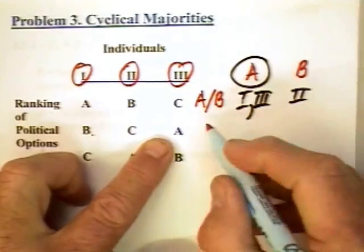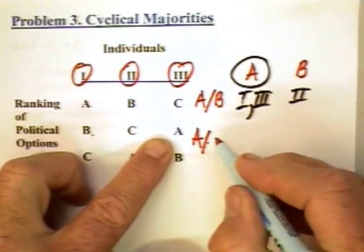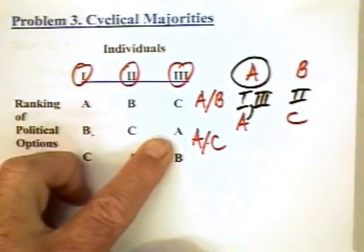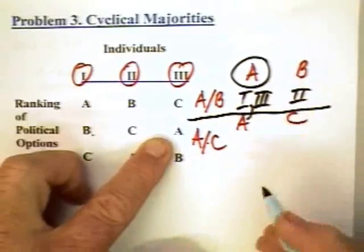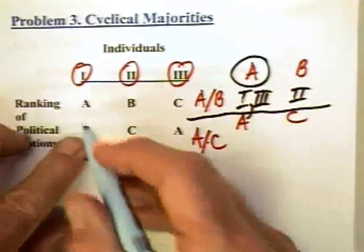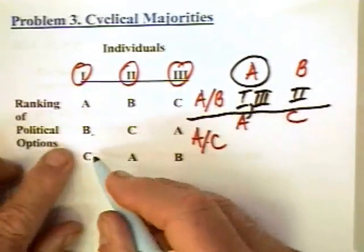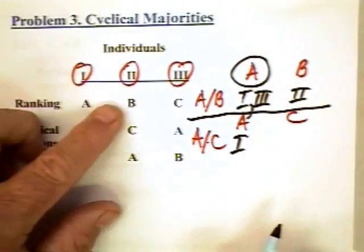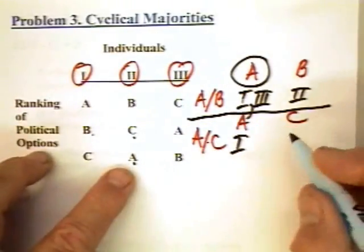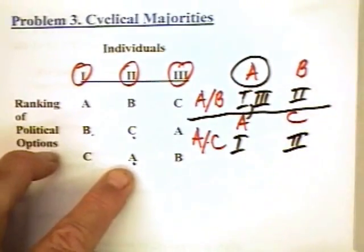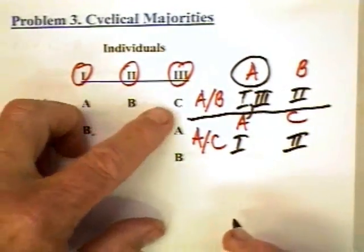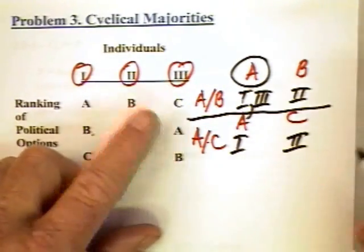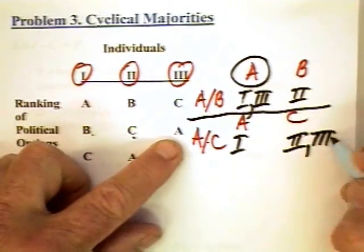Now let's suppose that we pit A against C and see which one wins this voting decision. Individual one will vote for A over C. Individual two would prefer C over A. Individual three would prefer C over A. As a consequence, C wins this election.